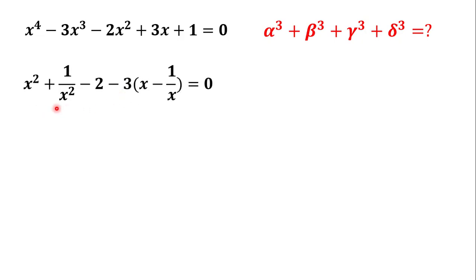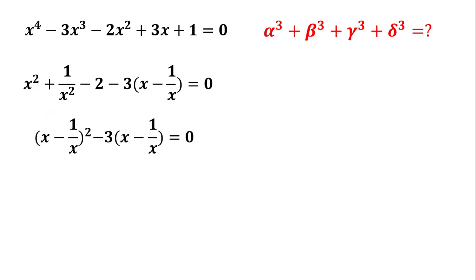The first three terms form a perfect square and we can write them as (x minus 1 over x) squared. Then (x minus 1 over x) is a common factor and we can factor it out.